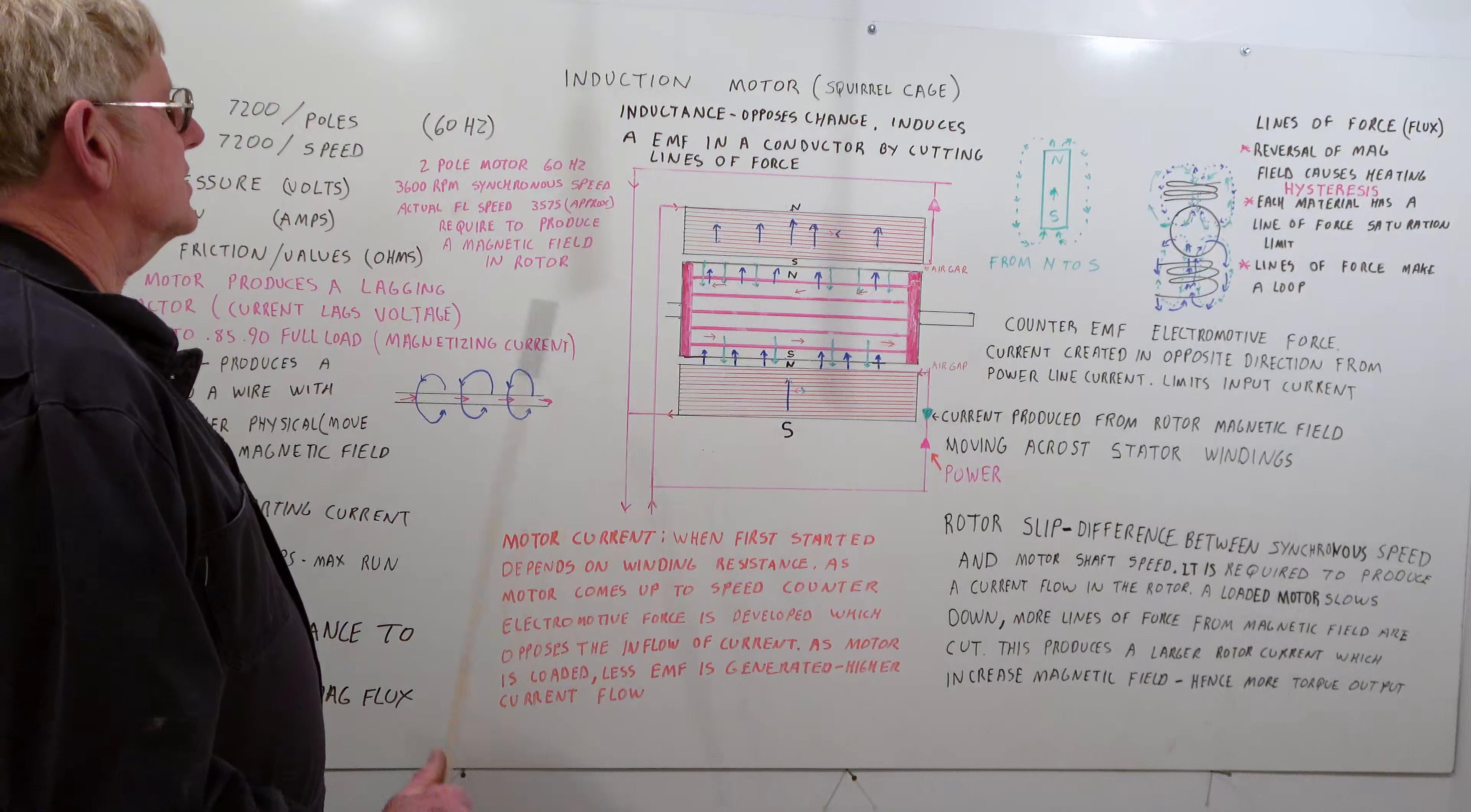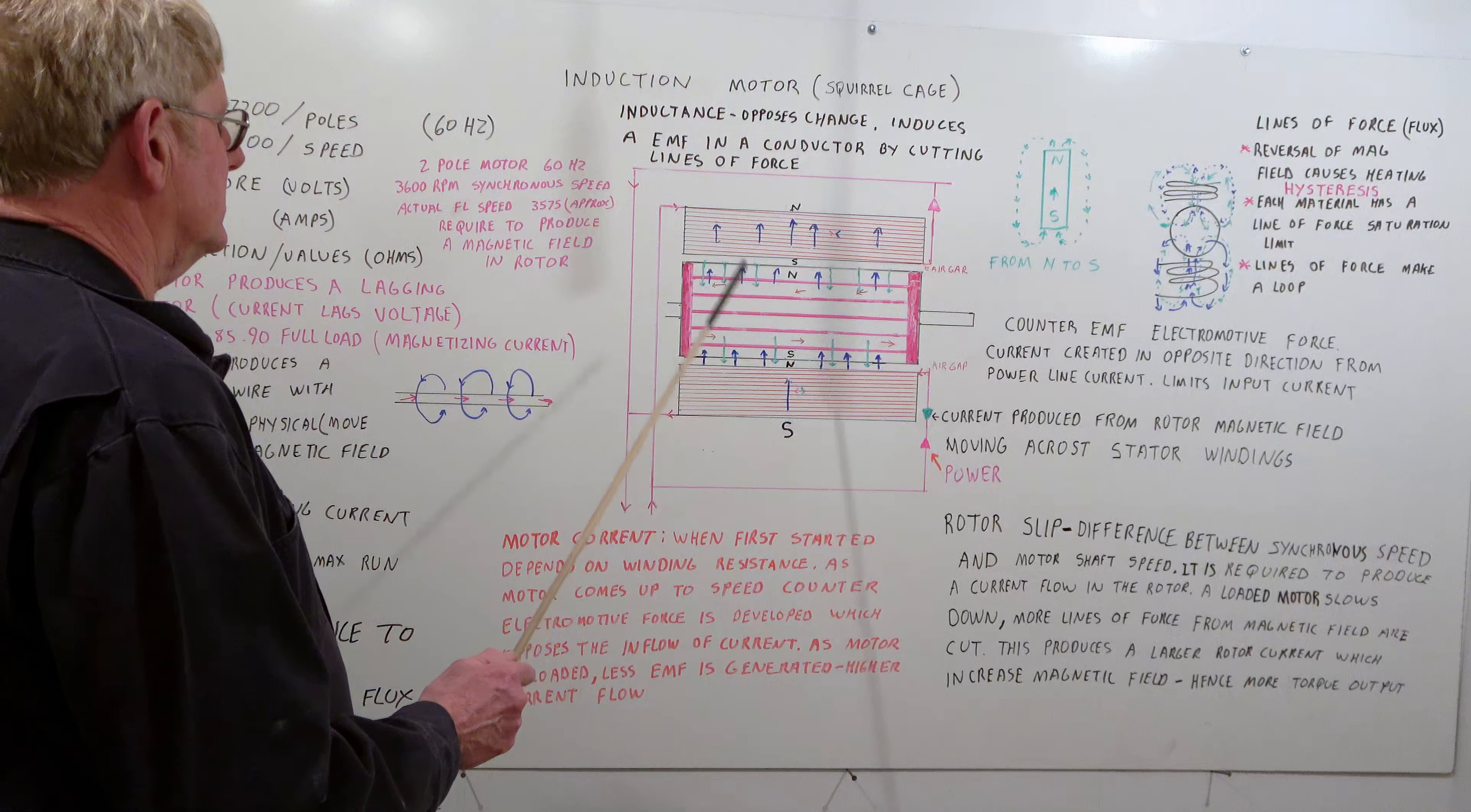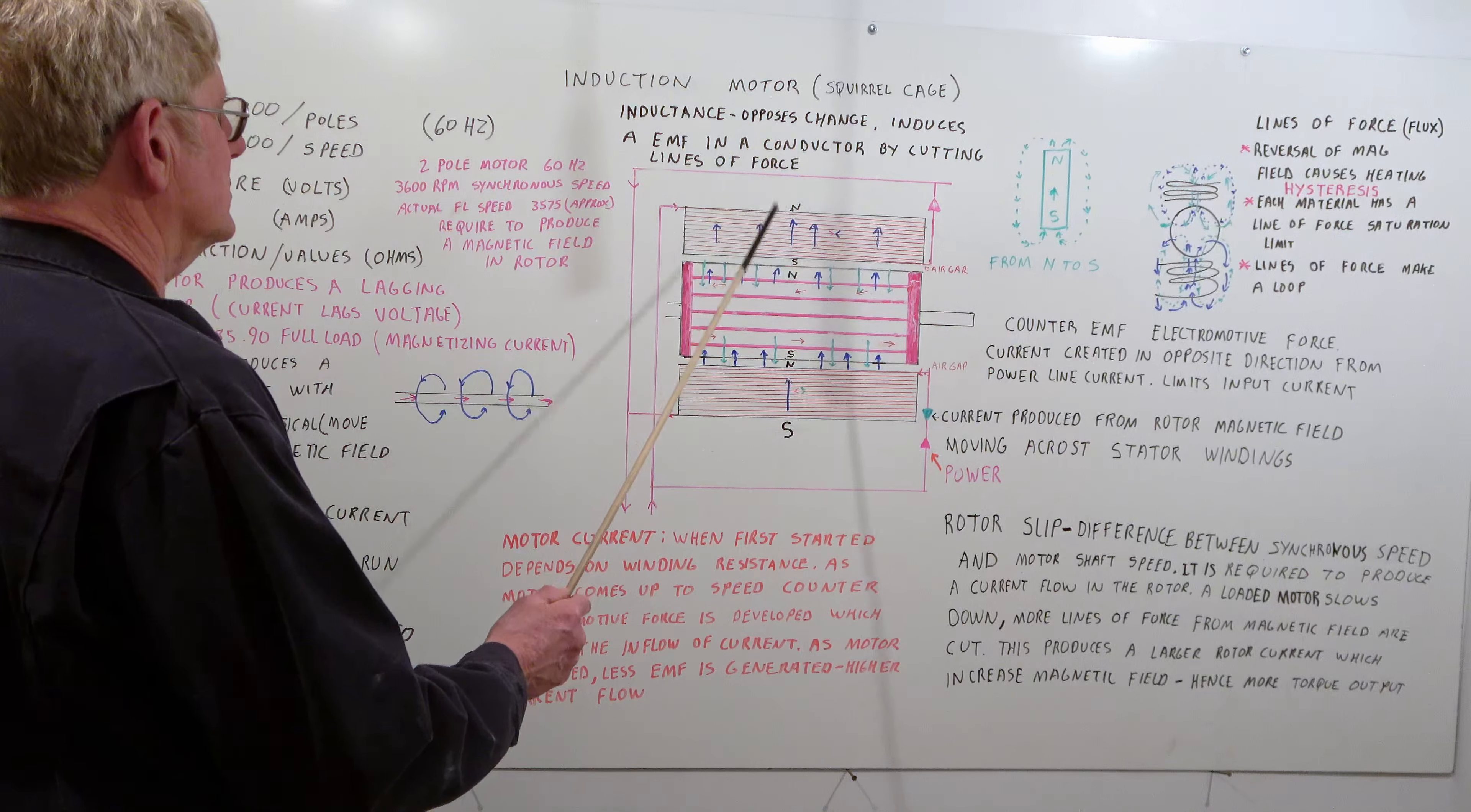Okay, this is our basic induction motor overview. This is a squirrel cage type induction motor. Basically induction opposes change and induces an EMF in a conductor by cutting lines of force.